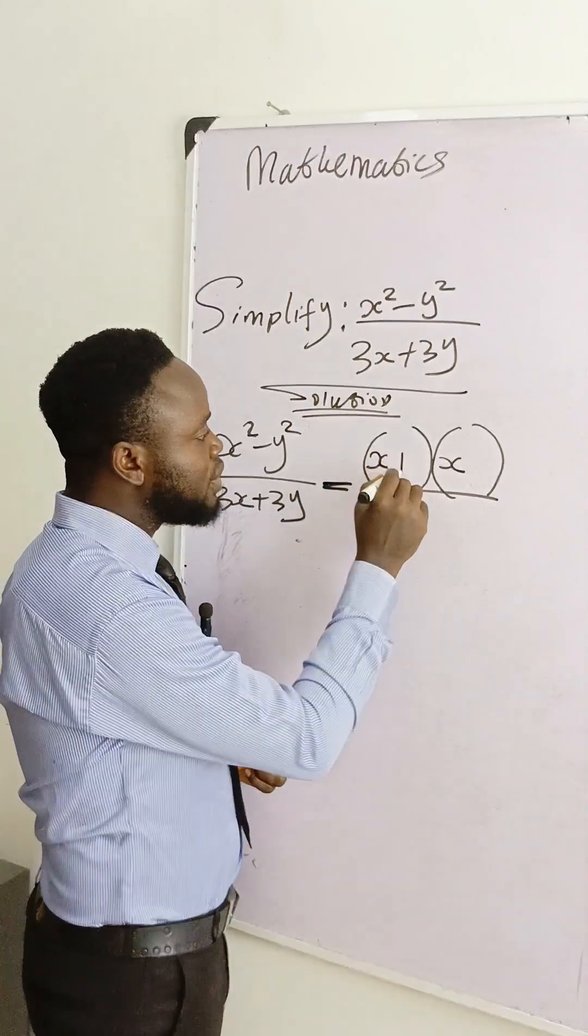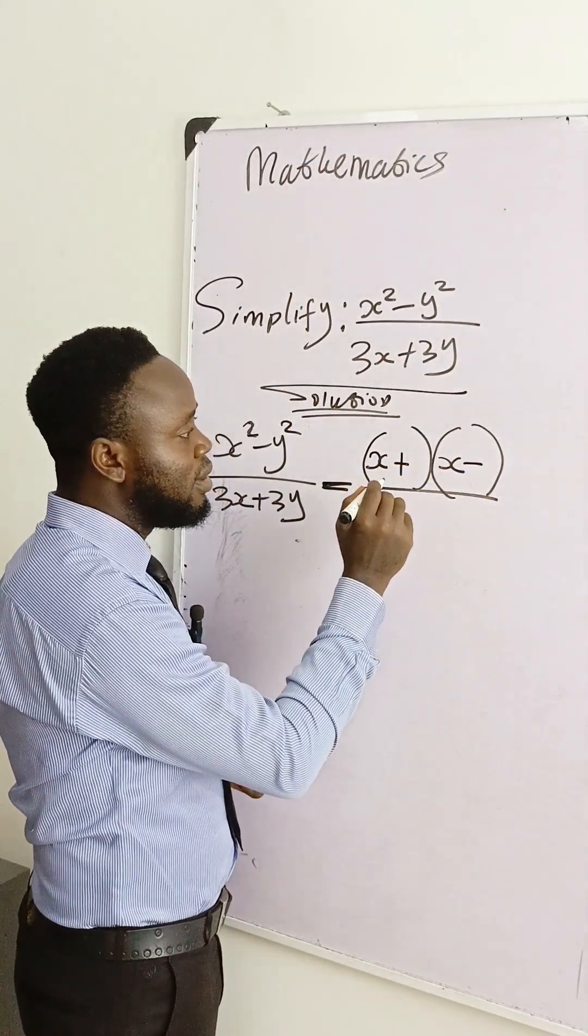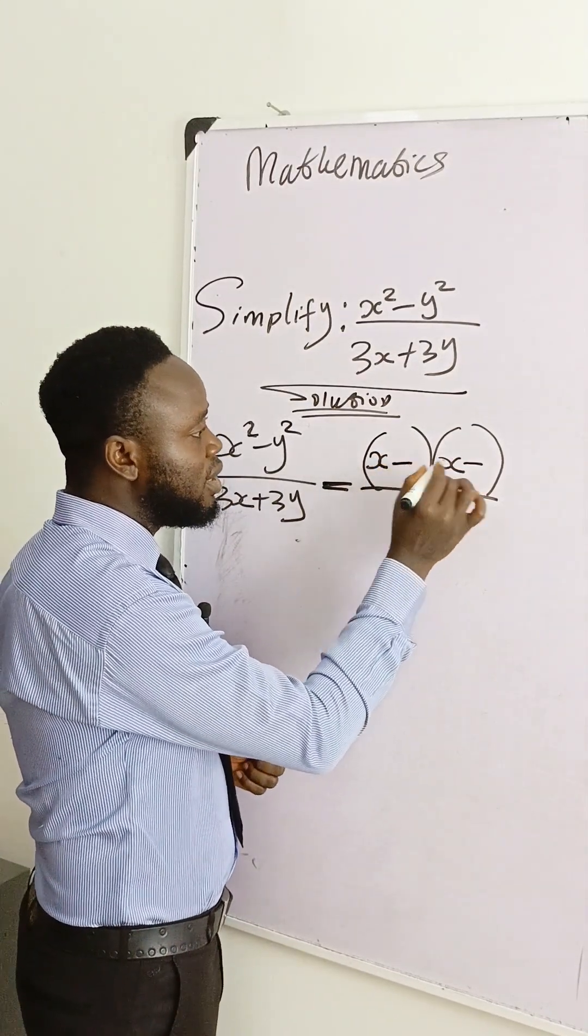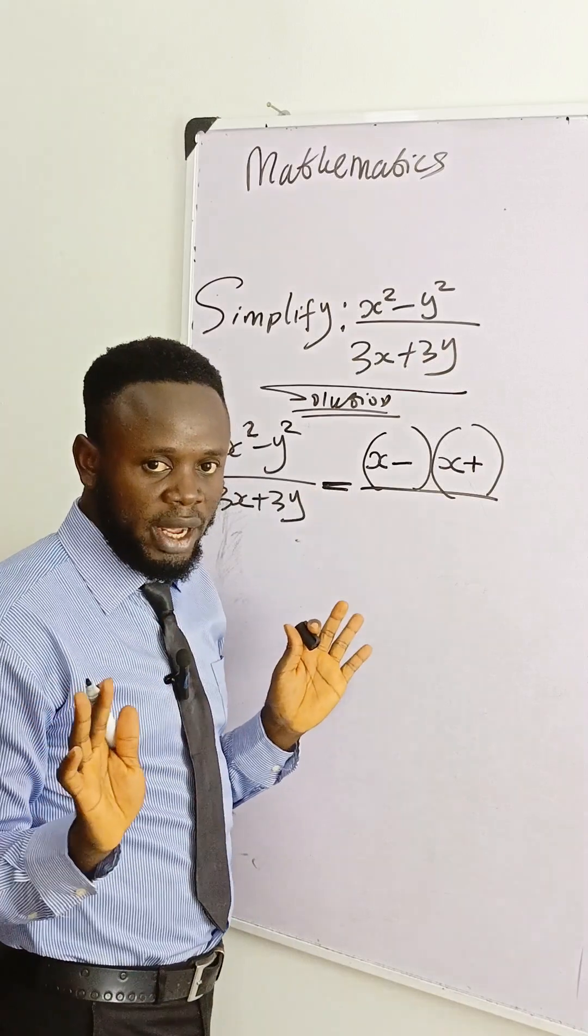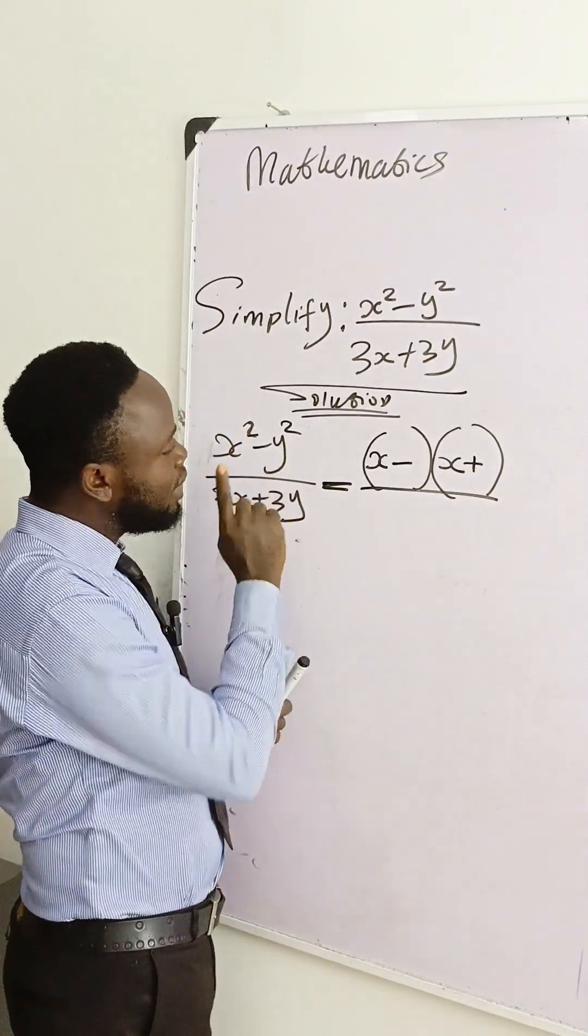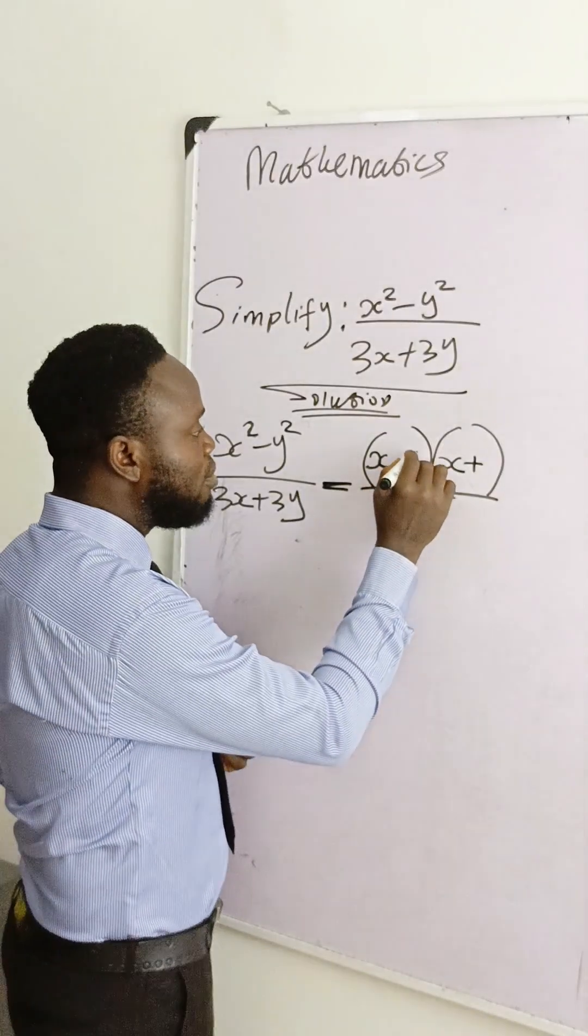Then what you do again, if you put plus here, put minus here. But if you prefer putting minus here, you put plus here, whichever one you like. The last letter here is y, put it at the last part of the brackets.